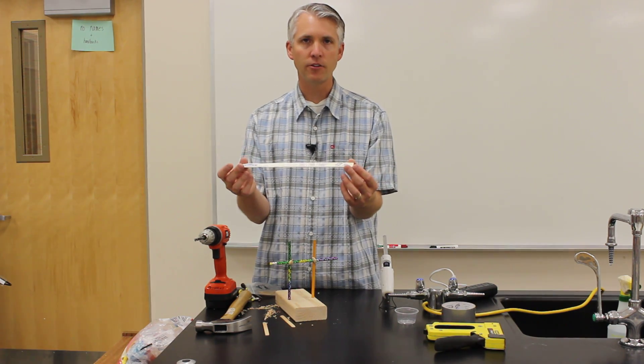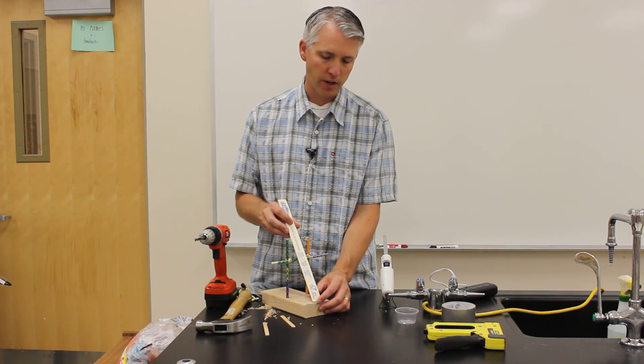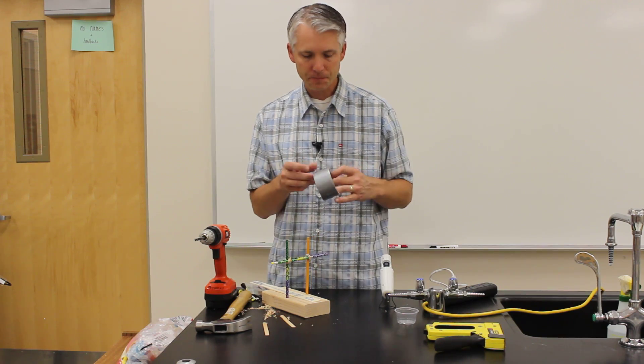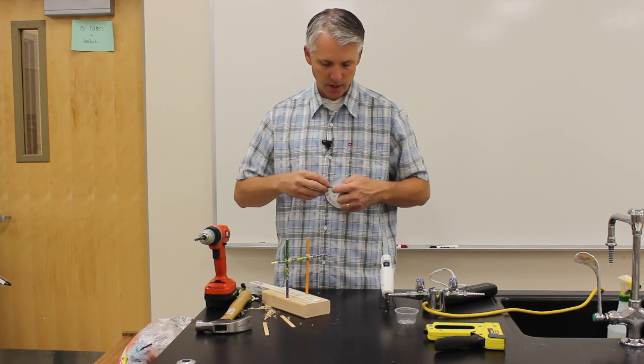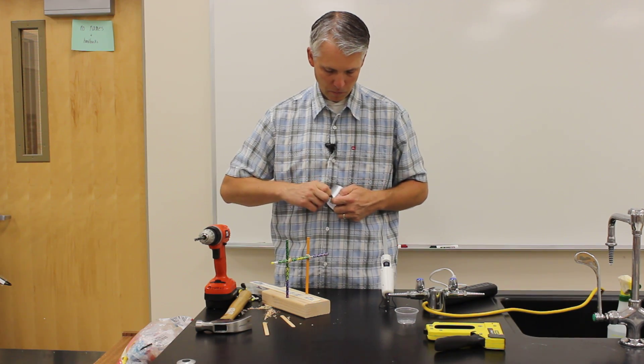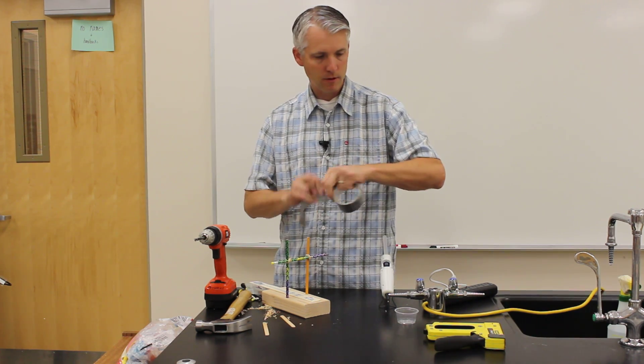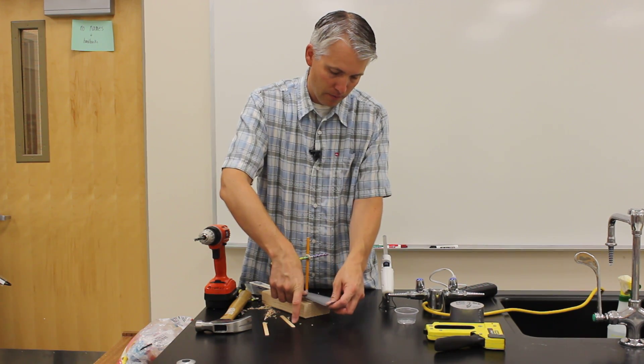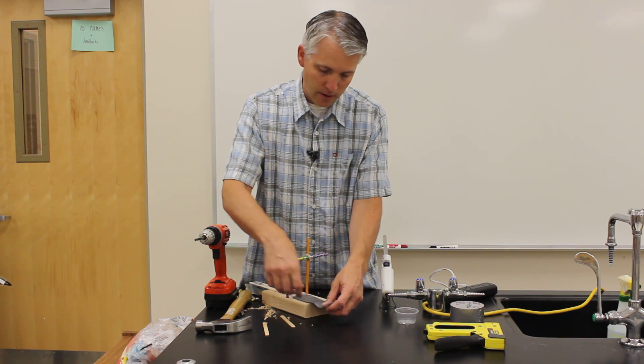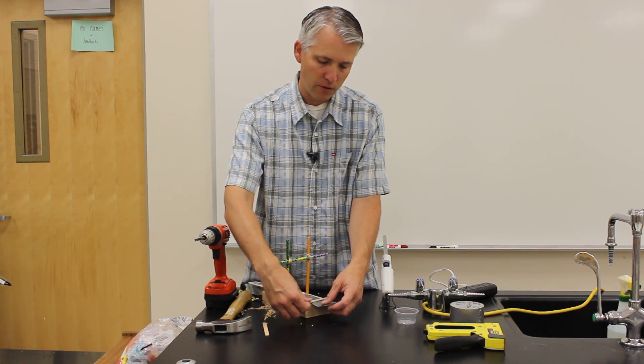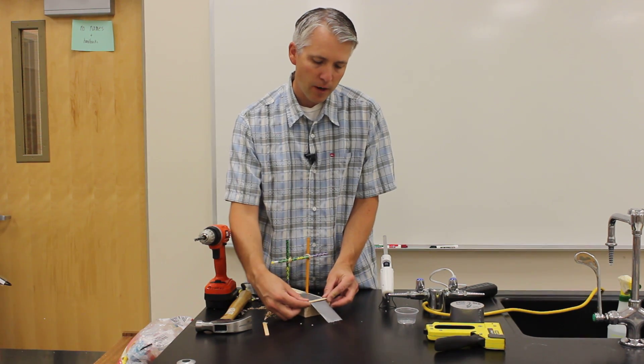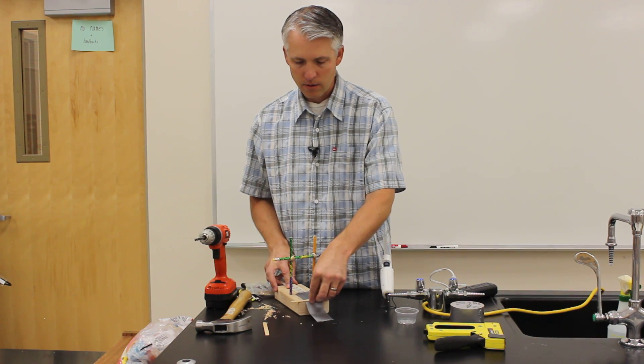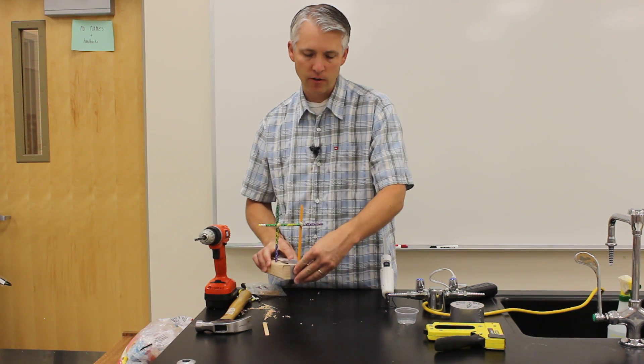Then I'm going to take the paint stir stick, which is going to be the arm of the catapult. I'm going to get a piece of duct tape and make a hinge basically out of duct tape. I'm going to lay this down on the paint stick, but then I want to take my popsicle stick and have it about one popsicle stick width away from the edge, and put the duct tape down like that.